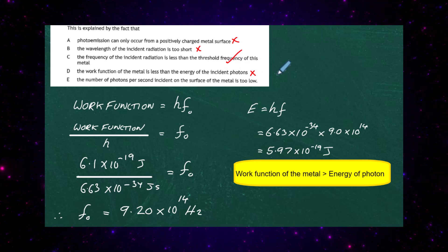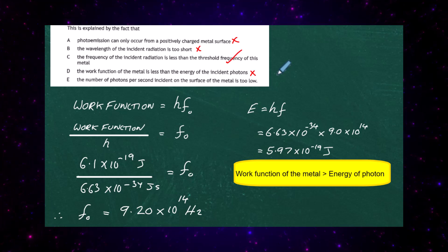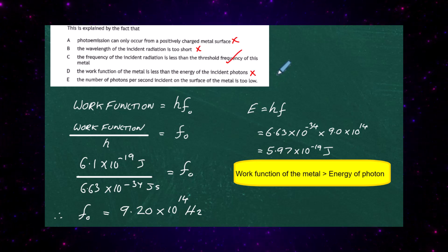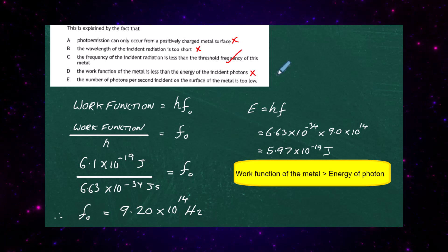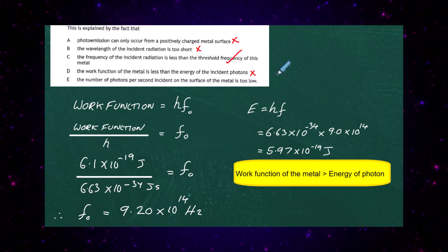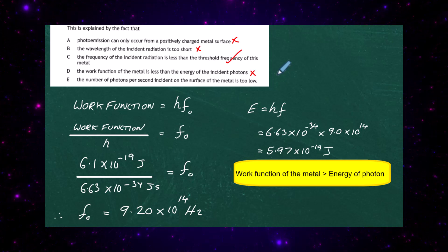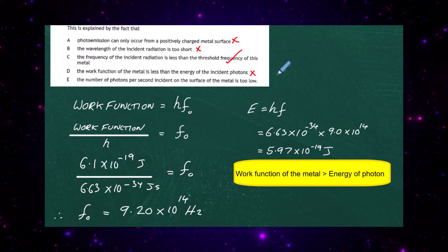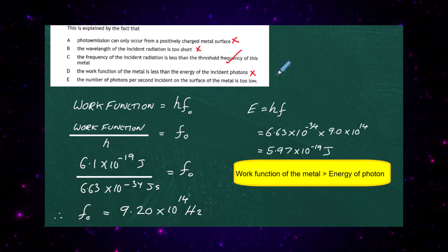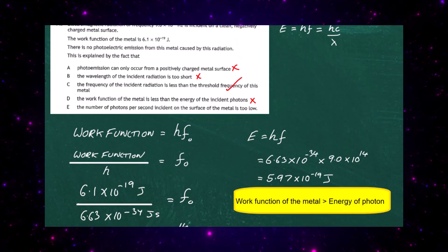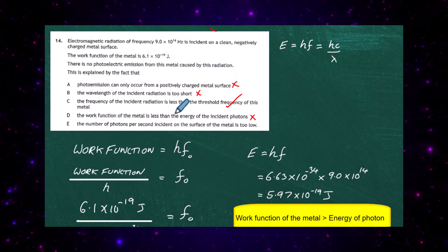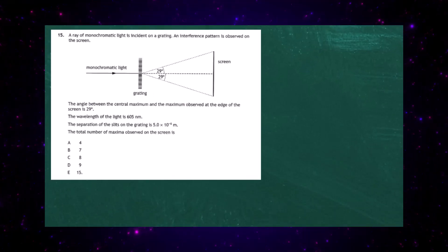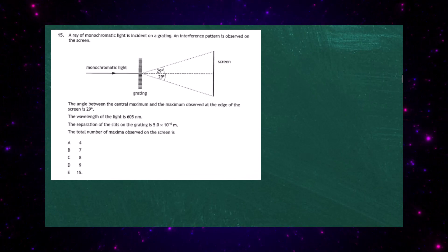Statement E says the number of photons per second incident on the surface is too low. However, it's a well-known fact that photo emission can occur even with the faintest light. The emission of photoelectrons depends on the frequency of the photon, not on how many photons are arriving at the surface. So the answer to question 14 is C.